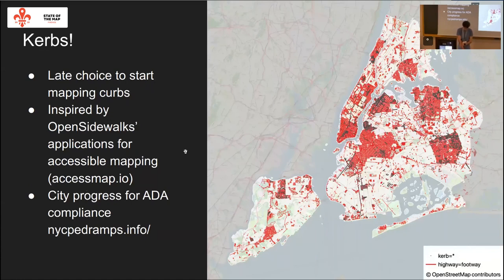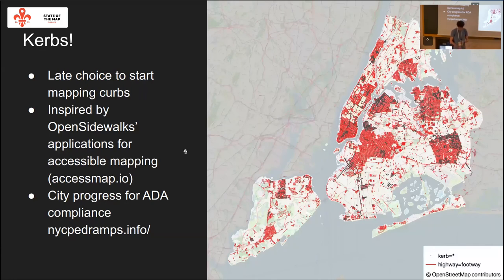Curbs were a late addition to our mapping efforts in New York. We were inspired by OpenSidewalks, which has a tool called AccessMap available in Seattle that helps navigate based on curb conditions. The city is required to install curb cuts everywhere because of the Americans with Disabilities Act — it's in progress, but there are more curbs to fix than the city can handle in a given time. This is a problem in almost all US cities. I'm hoping this data can help identify high-priority spots that have been overlooked, without individuals having to complain on a case-by-case basis.